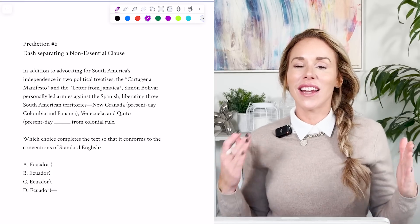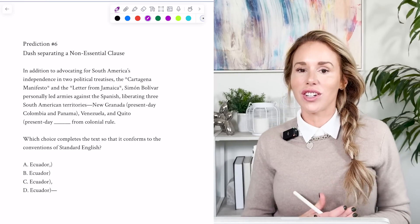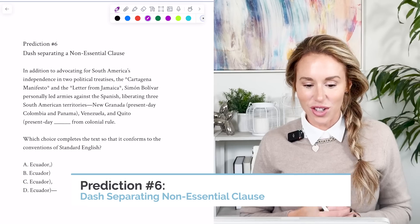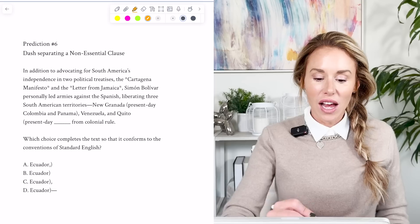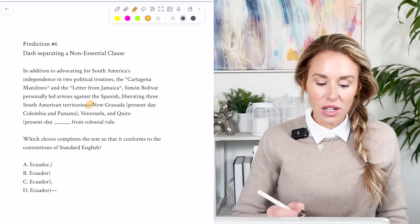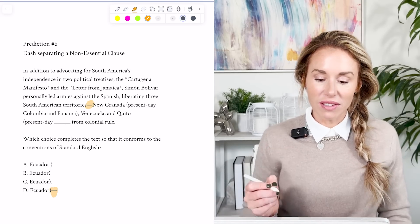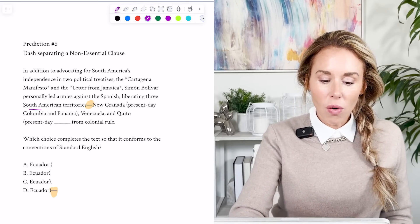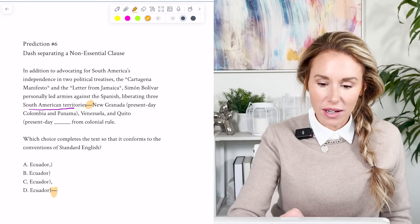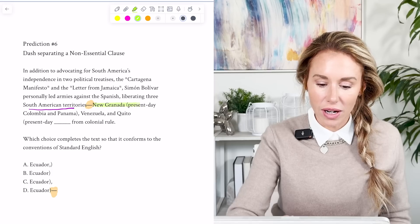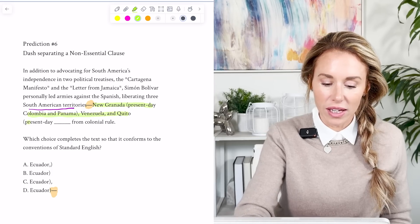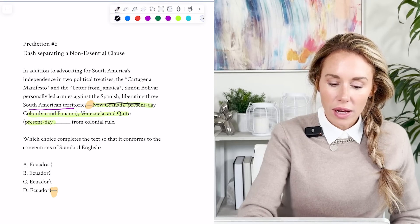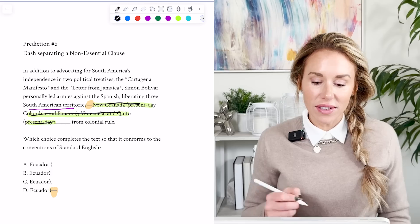All right. My next prediction is that you will have a grammar question with a dash separating non-essential clause with another dash. So essentially these are pretty easy. If you see a dash in the sentence, gravitate towards the one with the dash and check to see if it's a non-essential clause. They go on to list South American territories specifically, New Grenada, Venezuela, Inquito, Ecuador.